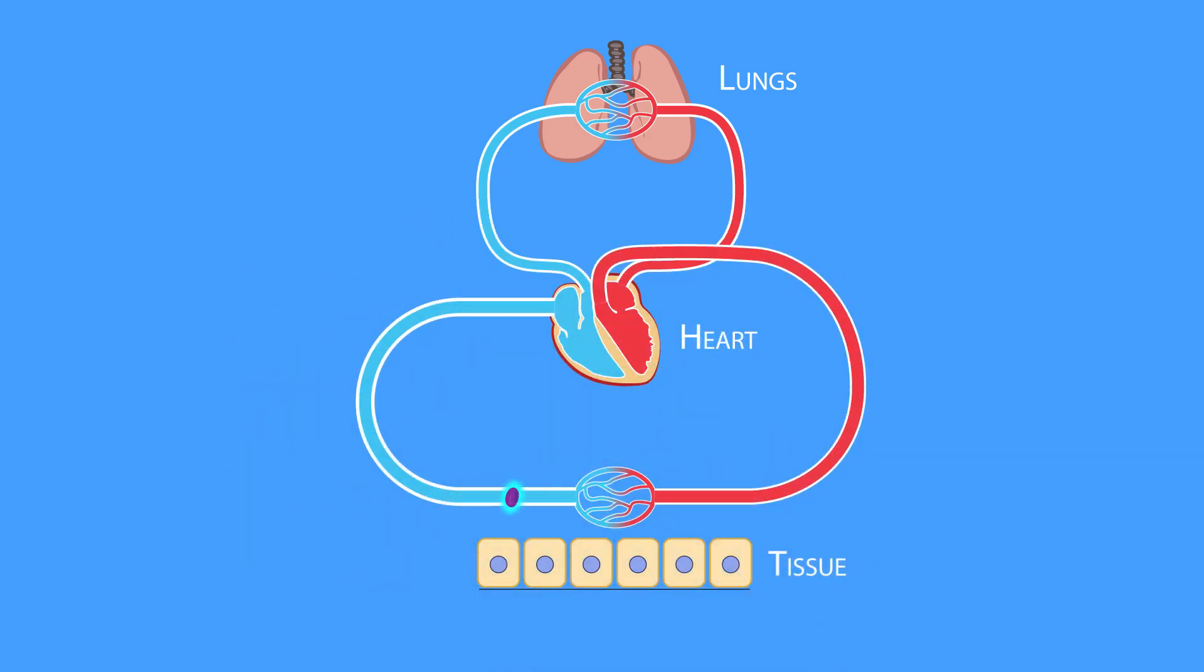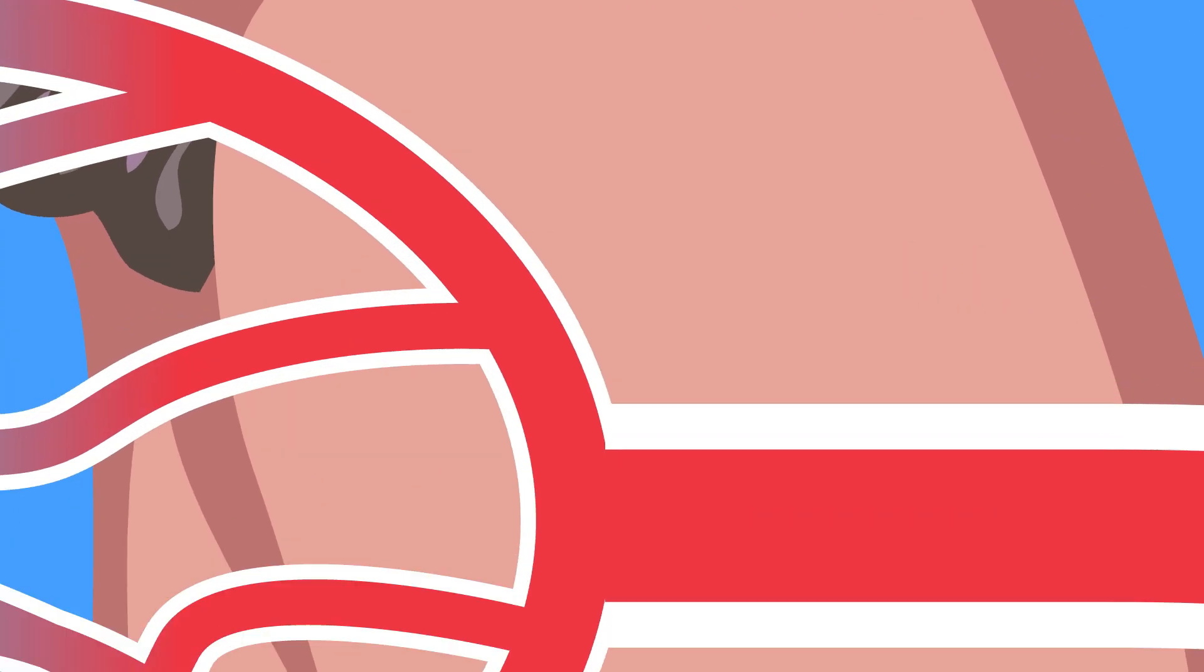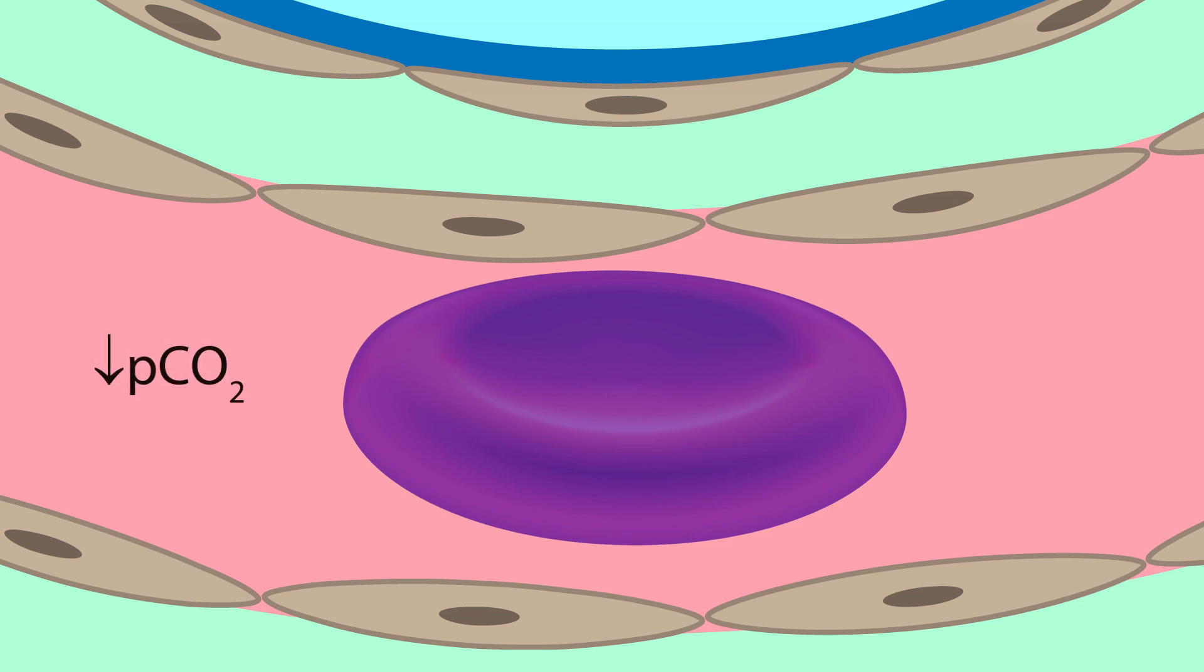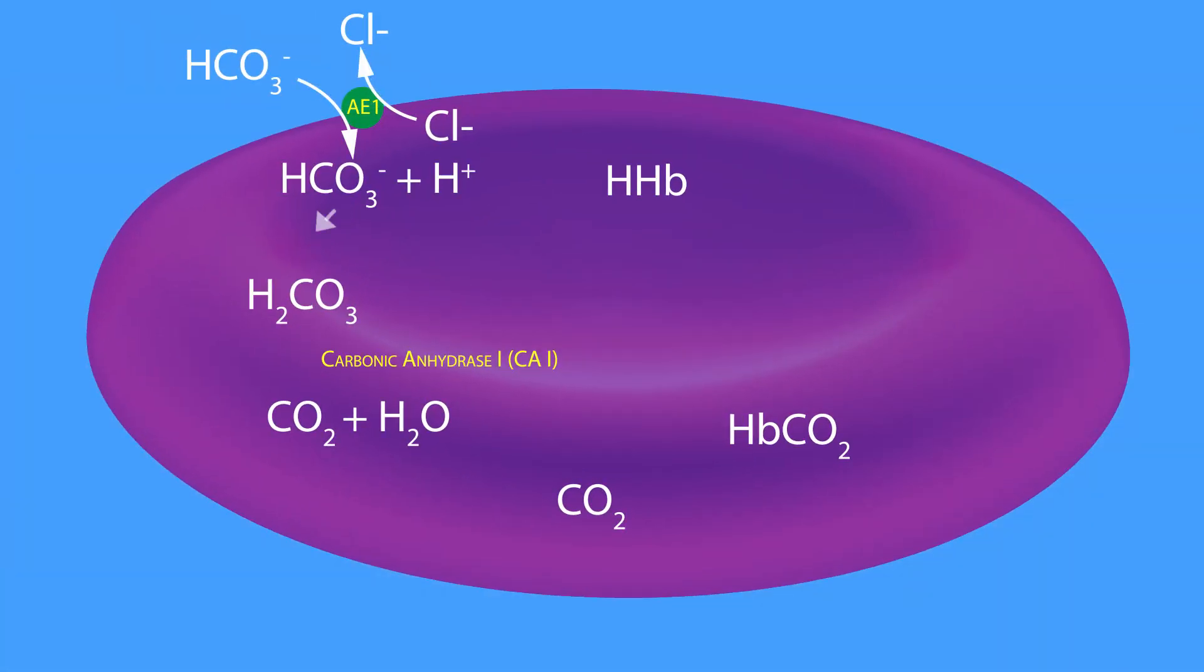Next, these oxygen-poor red blood cells travel back to the lungs, where the low carbon dioxide tension and high oxygen tension cause the reaction to proceed in the reverse direction. As a result, the increase in intracellular bicarbonate ions increases the intracellular pH.